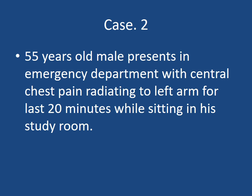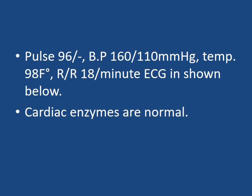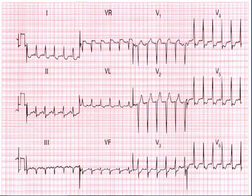Case 2: A 55-year-old male presents to the emergency department with central chest pain radiating to the left arm for the last 20 minutes while sitting in his study room. Pulse is 96, blood pressure 160/110, temperature normal, respiratory rate 18 per minute. ECG is shown. The cardiac enzymes are normal — this is an important point.